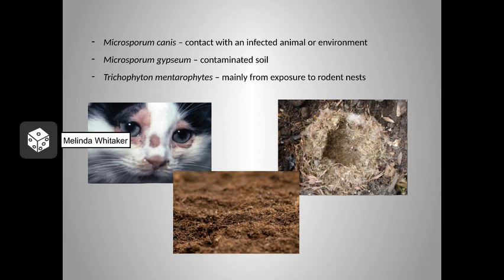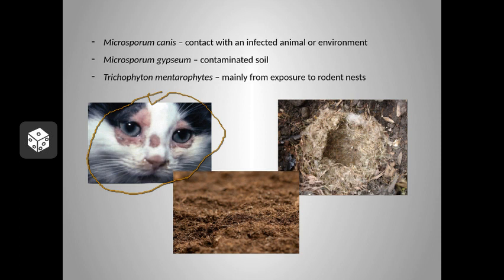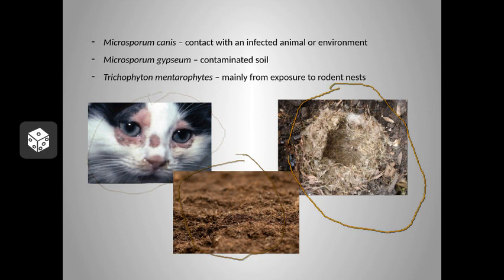Here we have some pictures showing the most common ways that Microsporum canis, Microsporum gypsium, and Trichophyton mentagrophytes are contracted. Microsporum canis is commonly contracted through contact with an infected animal or the environment. Microsporum gypsium is often contracted through contaminated soil. Trichophyton mentagrophytes is contracted mainly from exposure to rodent nests. Ringworm can persist in the environment for months or even years, and it can be spread on grooming implements, contaminated toys or bedding, and by humans on our clothing and hands. The incubation period for ringworm is anywhere between four days and four weeks.